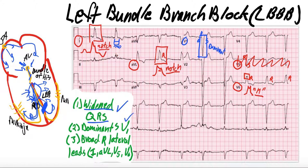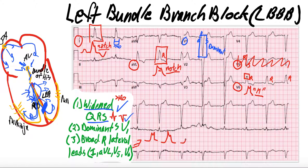In left bundle branch blocks, we have a widened QRS — greater than 120 — which we see throughout all the leads. Oftentimes we have this dominant S wave in V1, where Q goes up and then S would go down, so you tend to see just this huge dominant S wave in V1. And for number three, we have these broad R waves in the lateral leads that can show M notching, regular notching, or just big monophasic R waves — all widened. And that is how you diagnose left bundle branch block on 12-lead EKG.